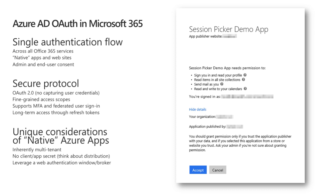Azure AD application authentication is implemented using the OAuth2 protocol. Users are redirected to Azure for authentication credentials so that the custom applications never get the actual credentials of the user. Depending on the authentication flow, the app ultimately gets an access token that's only valid for a specific amount of time, for a specific user, with specific permissions, and for a specific resource — in our case the Microsoft Graph. These access tokens can be refreshed after they expire using an associated refresh token. The login process also supports multi-factor authentication and federated authentication.